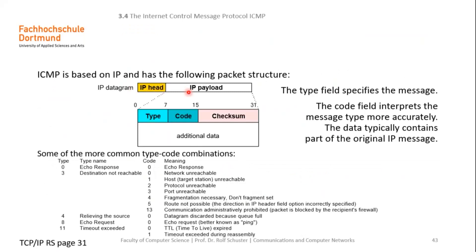The format is: type, code, checksum, and additional data. The type field specifies the type of the ICMP reported error, and the code field interprets the message type more accurately. The additional data typically contains part of the original IP message that generated this error message. In the type field, we could code those numbers.